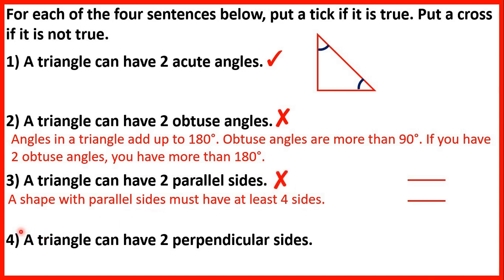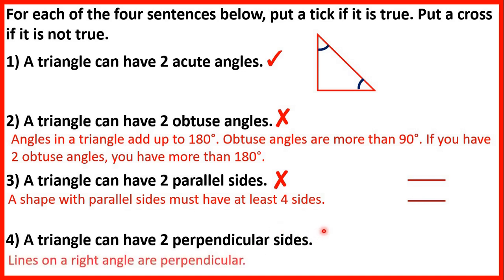And finally, a triangle can have two perpendicular sides. Perpendicular lines are lines which cross at right angles. Lines on a right angle are perpendicular, and we can have a right-angled triangle, so this statement is true.